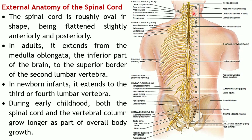The vertebral column consists of cervical vertebrae, twelve thoracic vertebrae, five lumbar vertebrae in the trunk, and the last part contains fused bones — the sacrum with five fused bones and the coccyx with four fused bones. The spinal cord extends from the medulla oblongata up to the second lumbar vertebra. The spinal cord is even shorter than the vertebral column.